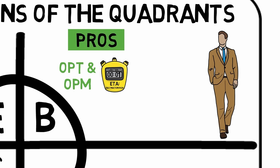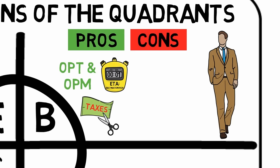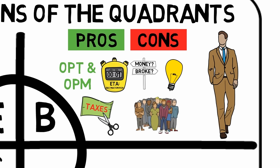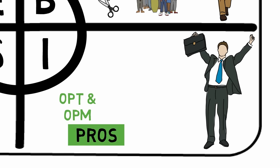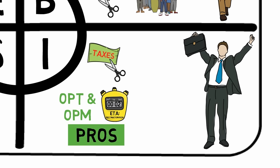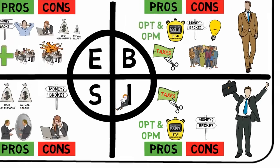B, the big business owner. Pros: financial freedom can be achieved very quickly, and a greater portion of your profits goes to you — in other words, you pay less tax. Cons: financial uncertainty, you might lose money, it requires a different set of skills than what school teaches, and you'll have to manage people. I, the investor. Pros: OPT and OPM, financial freedom can be achieved quickly, a greater portion of your profits goes to you — less tax — and it can be passive. Cons: financial uncertainty, you might lose money.